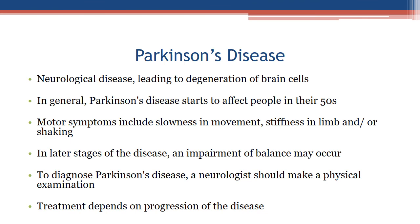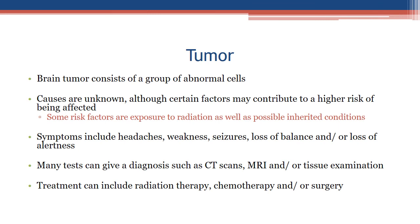Tumor — a brain tumor consists of a group of abnormal cells. Causes are unknown, although certain factors may contribute to higher risk, including exposure to radiation and possible inherited conditions. Symptoms include headaches, weakness, seizures, loss of balance, and loss of alertness. Diagnosis can be made through CT scans, MRI, and/or tissue examination. Treatment can include radiation therapy, chemotherapy, and/or surgery.